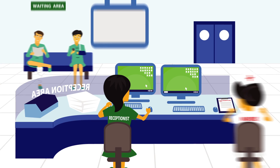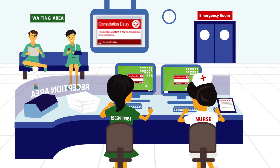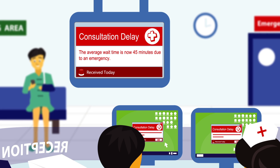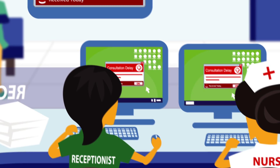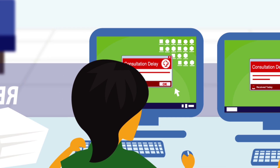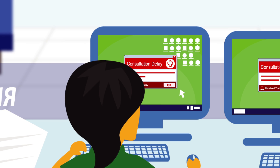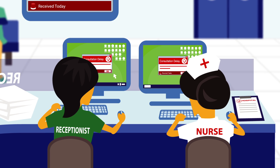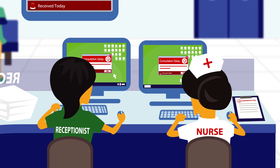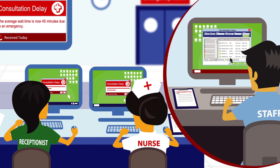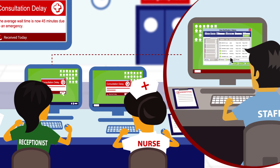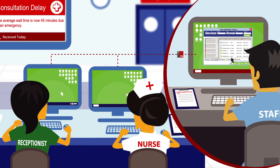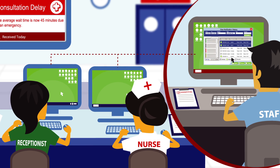On large information panels, the messages will display full screen, and you can decide how long they remain visible. On desktops, the message will be square and centered to ensure it can't be missed. You can choose whether the message disappears after a set period of time, or you want each recipient to acknowledge receipt. When they do, the system records their acknowledgement on your notification server.